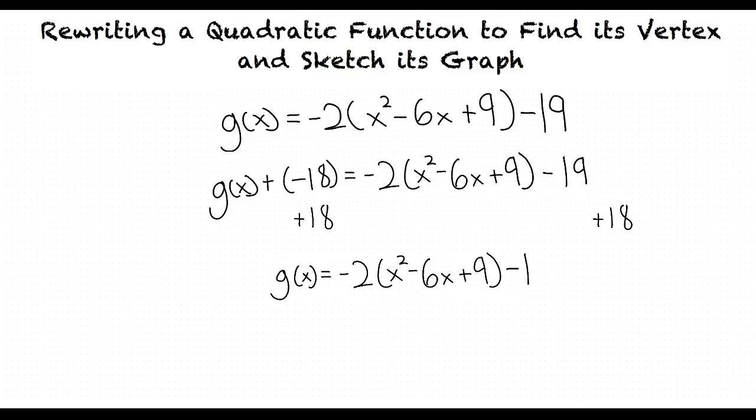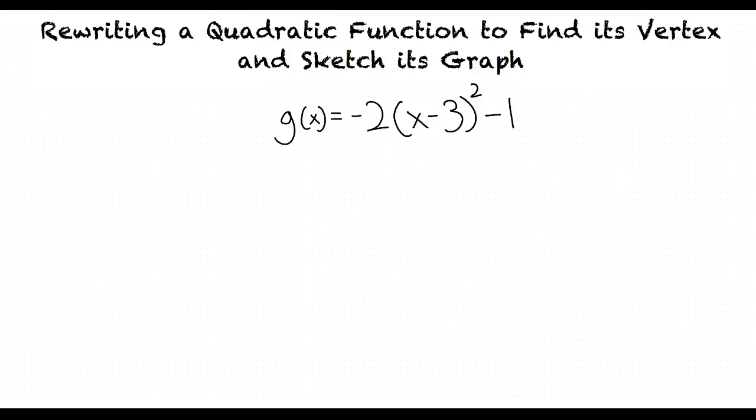Then we factor the trinomial inside the parentheses, and our result is g of x equals negative 2 times x minus 3 squared minus 1. Now that we have our quadratic function in the form of g of x equals a times x minus h squared plus k...